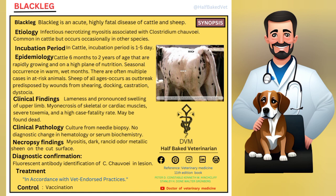The incubation period in cattle is one to five days. Epidemiologically, cattle of six months to two years of age that are rapidly growing and on a high plane of nutrition are at risk. Seasonal occurrence is in warm, wet months, and there are often multiple cases in at-risk animals.